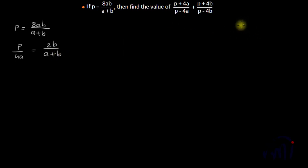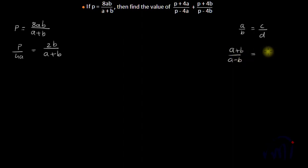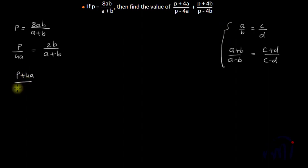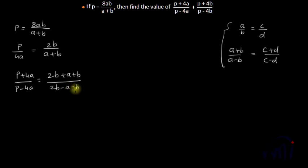By componendo-dividendo, if two ratios a:b and c:d are equal or in proportion, then (a+b)/(a-b) will also be in proportion with (c+d)/(c-d). Applying this, I get (p+4a)/(p-4a) = (2b + a+b)/(2b - a-b), which equals (a+3b)/(b-a).